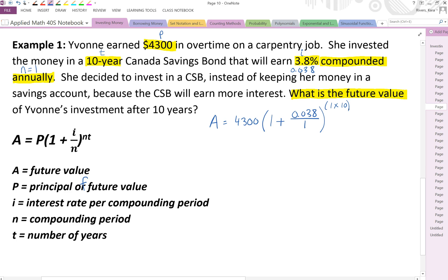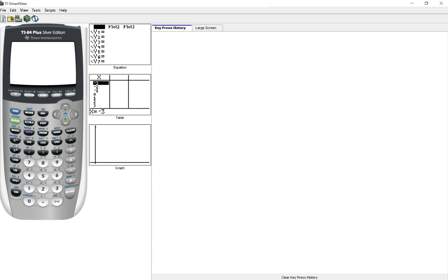Now being able to substitute the numbers is one thing. Being able to punch this into your calculator in an efficient way is another thing. So take out your calculators and try this out. Now you can punch all of this in in one step or you can do it in steps. So we've got 4300 times open bracket 1 plus and then open bracket again 0.038 divided by 1. In this case that's not a big deal but it's not always going to be 1 so let's see how to do that. So that closes the inside brackets that closes the outside brackets and this is all to the exponent of and then you'd open bracket here 1 times 10.